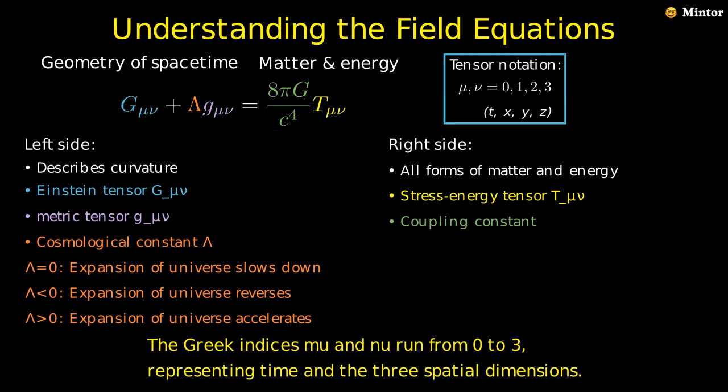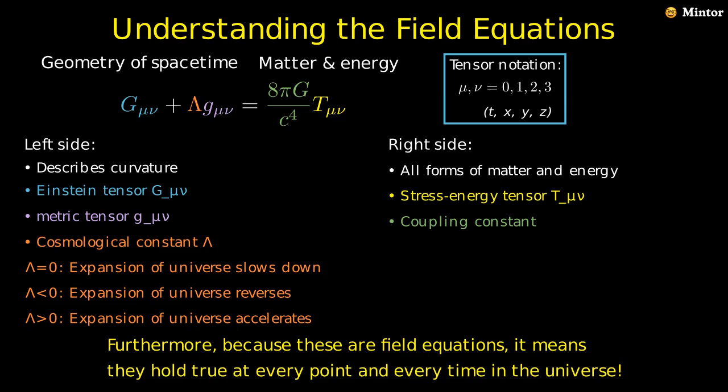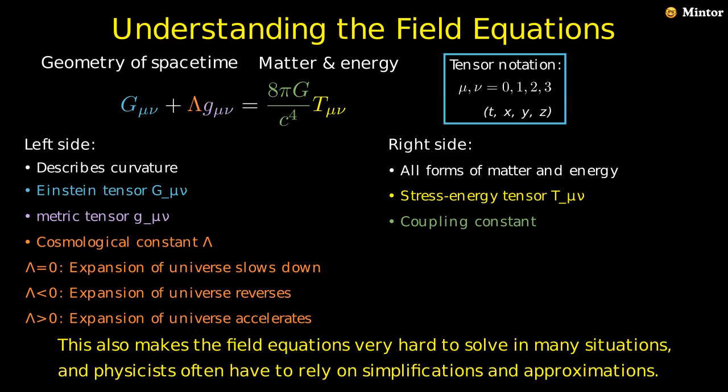The Greek indices μ and ν run from zero to three, representing time and the three spatial dimensions. This means that every object with these indices is actually a four by four matrix, and the field equations is like a big matrix of equations, or 16 individual equations. Furthermore, because these are field equations, it means they hold true at every point and every time in the universe. This also makes the field equations very hard to solve in many situations, and physicists often have to rely on simplifications and approximations.